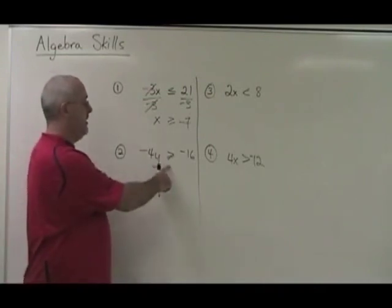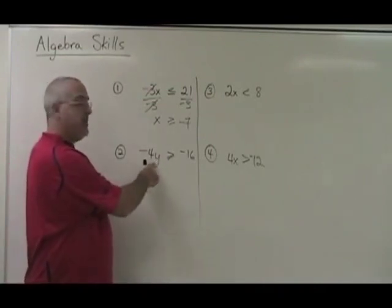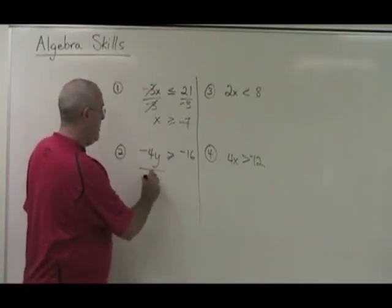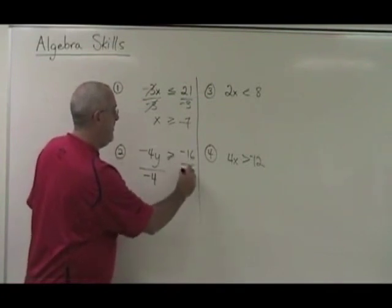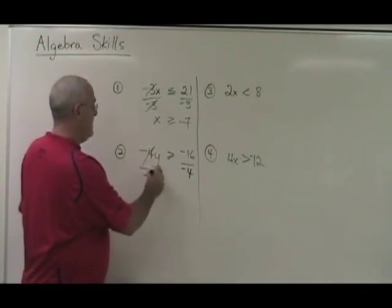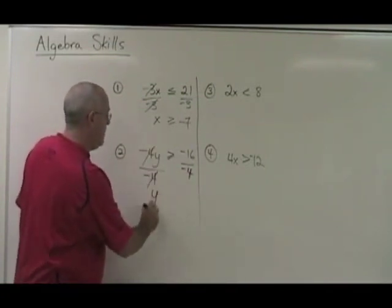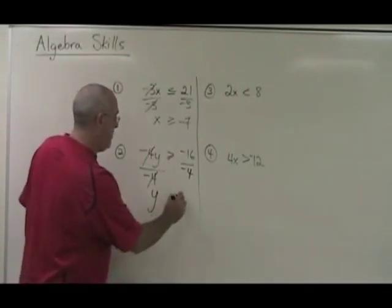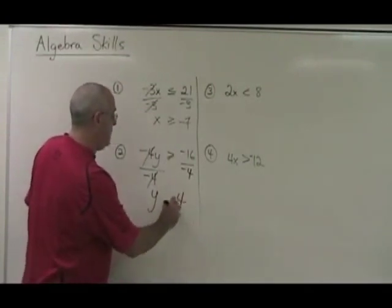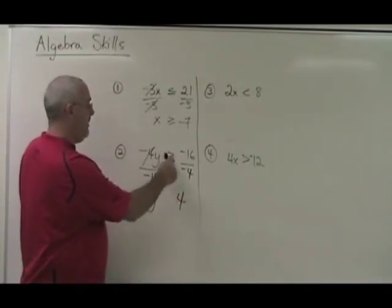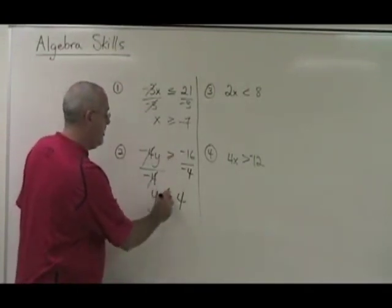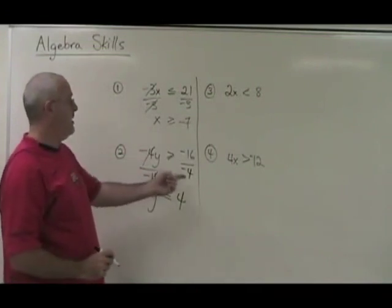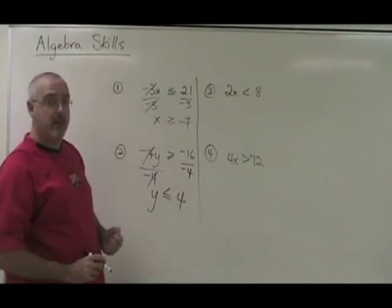Here's another example. My y is being multiplied by negative 4. I divide both sides by negative 4. These cancel. Y is isolated. Negative 16 divided by negative 4 is positive 4. But I have to turn this sign backwards, because I divided both sides of the equation by a negative number.